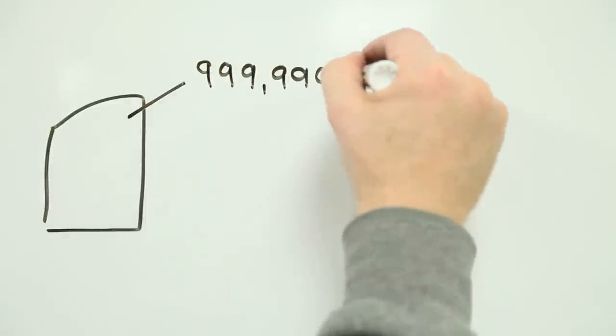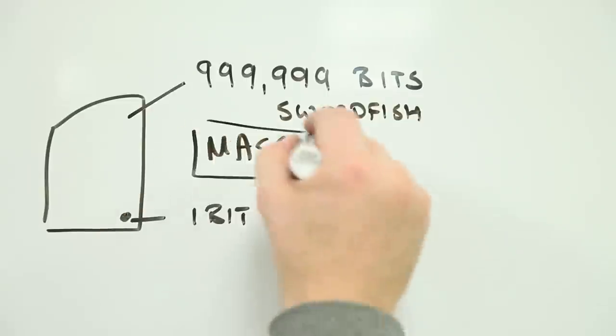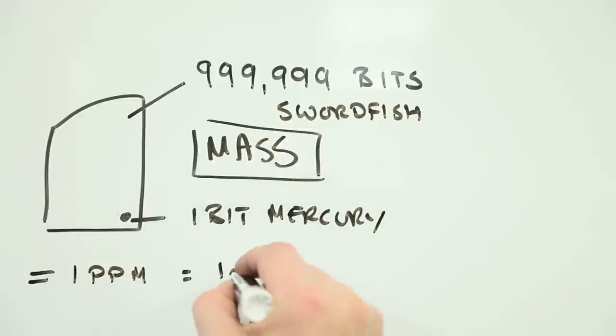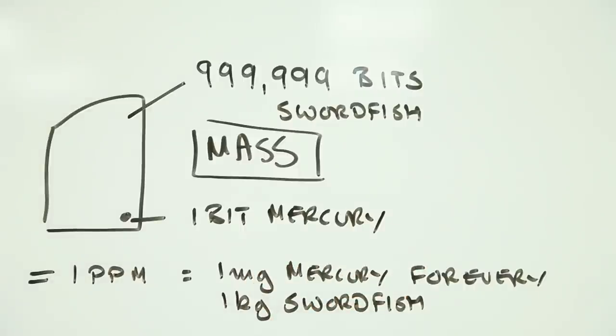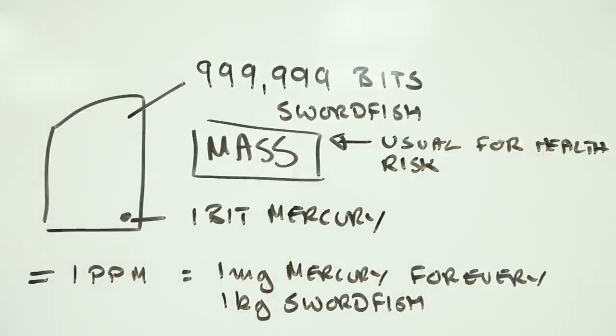Fortunately, going back to the swordfish steak, concentrations of hazardous substances are usually measured on a mass-for-mass basis. So one part per million mercury in swordfish is the same as saying one milligram of mercury for every kilogram of fish. But it does pay to know what is being compared to what, just in case.